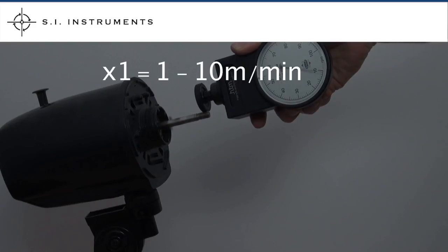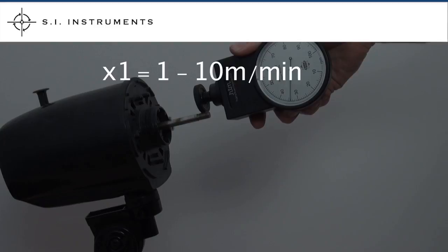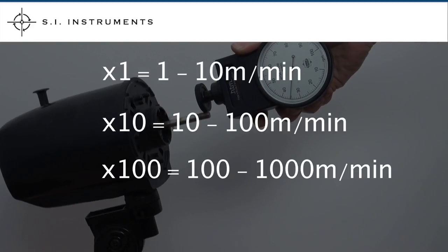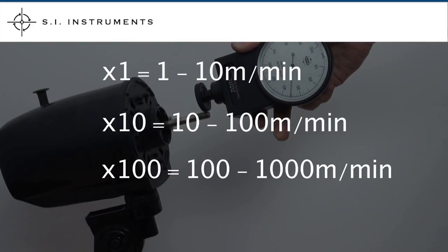When measuring using the wheel attachment, the measurement is in meters per minute, and the multiplier works like this: times 1 equals 1 to 10 meters per minute, times 10 equals 10 to 100 meters per minute, times 100 equals 100 to 1000 meters per minute.